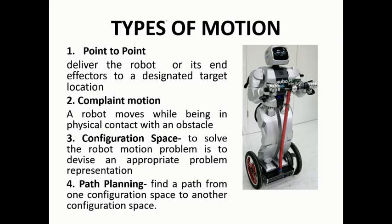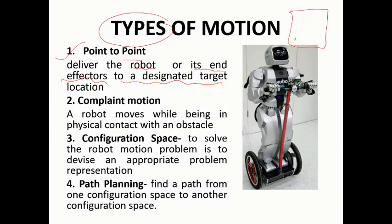Now we have different types of motion. First is point-to-point motion: the robot's effector is delivered to a designated target location. For example, the robot has to move from this point to that point — the path may pass through more than one point. Moving the robot from one location to another to another is considered point-to-point.